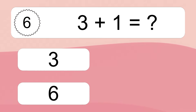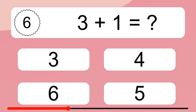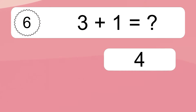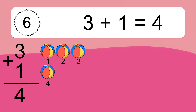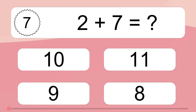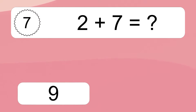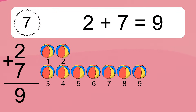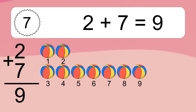3 plus 1 equals what? 3 plus 1 equals 4. Let's count it: 1, 2, 3, 4. 2 plus 7 equals what? 2 plus 7 equals 9. Let's count it: 1, 2, 3, 4, 5, 6, 7, 8, 9.